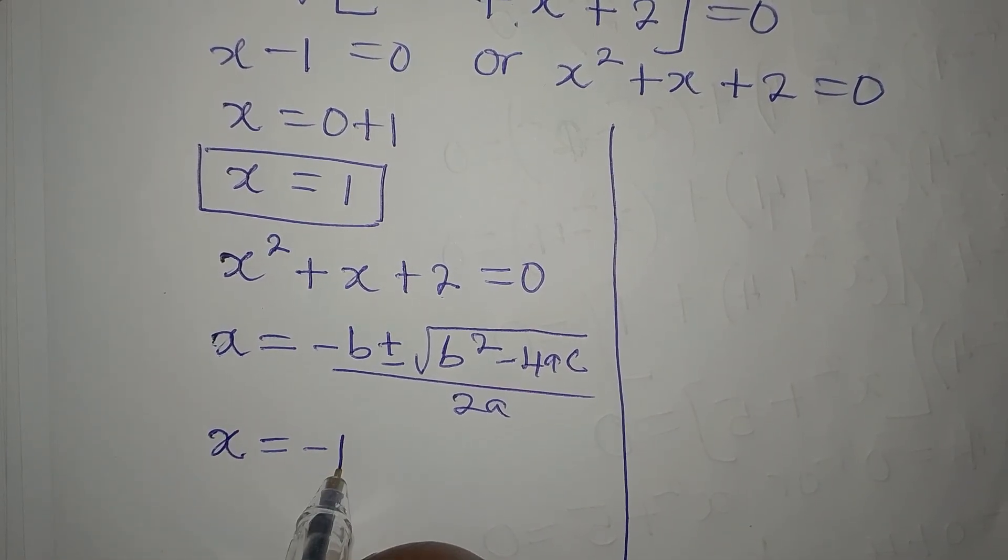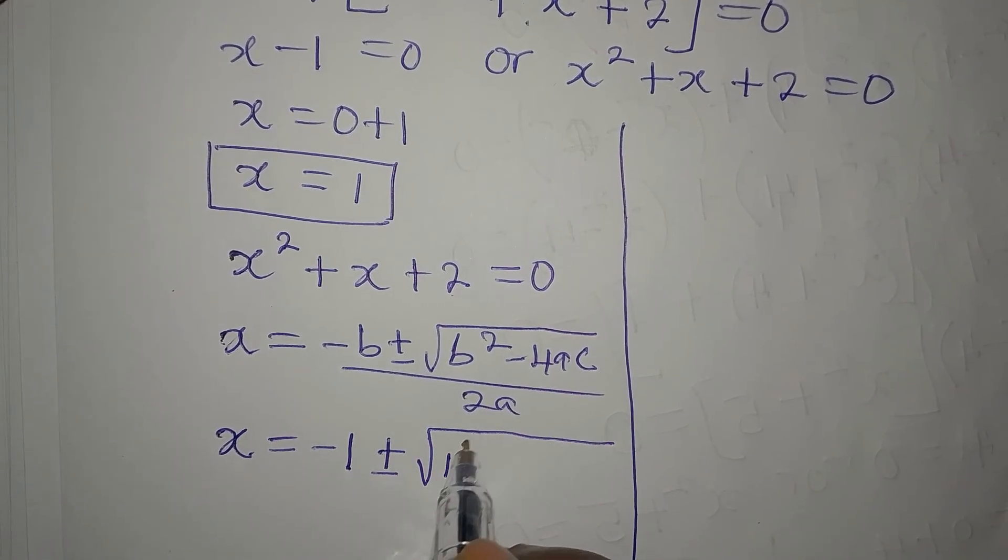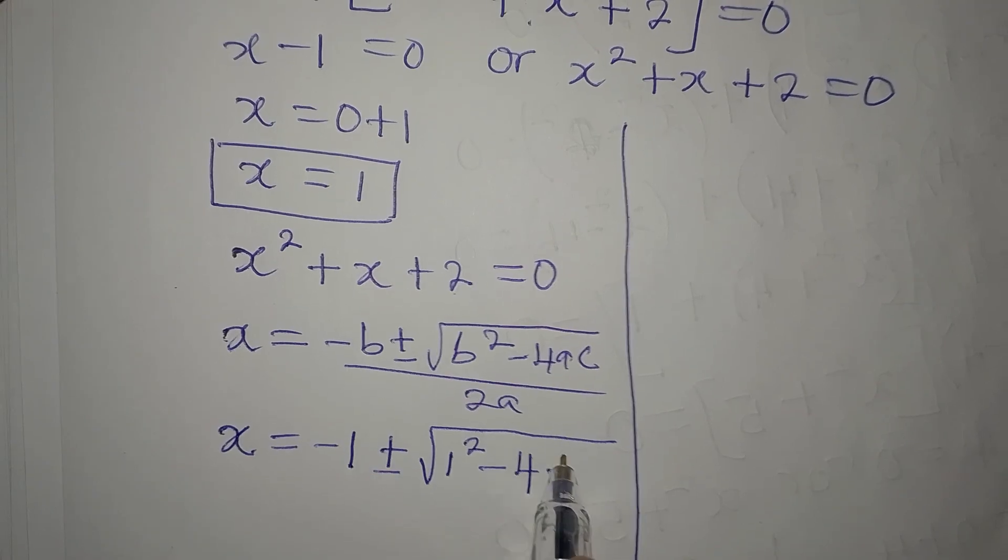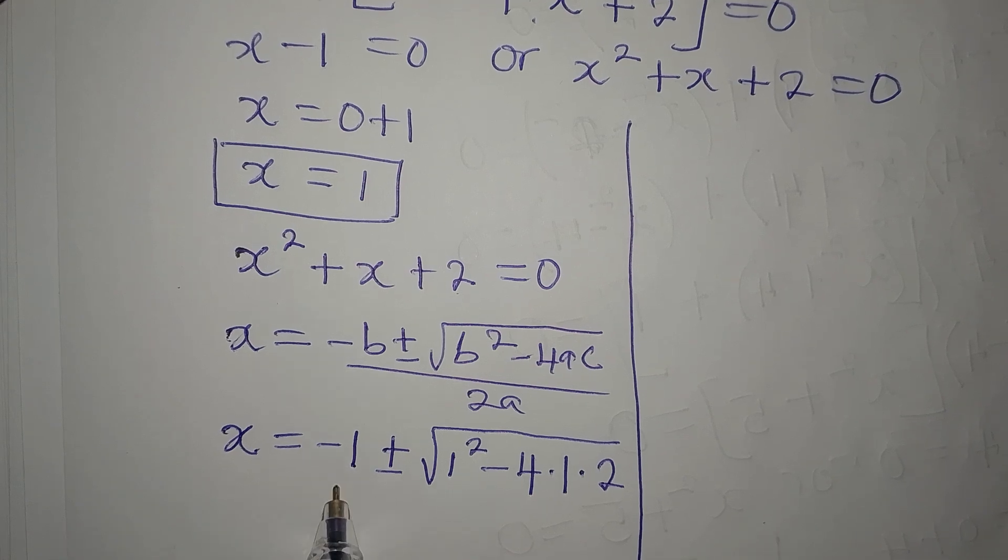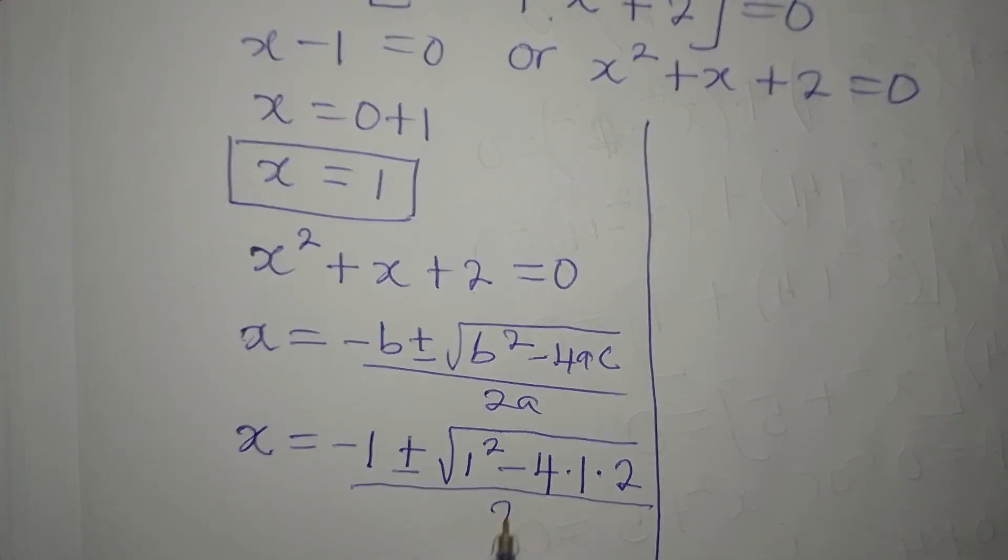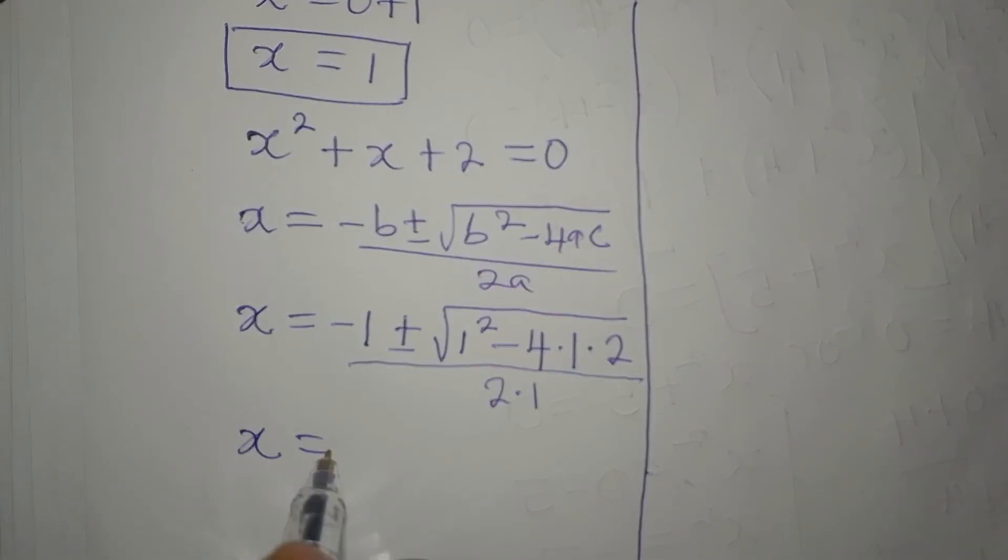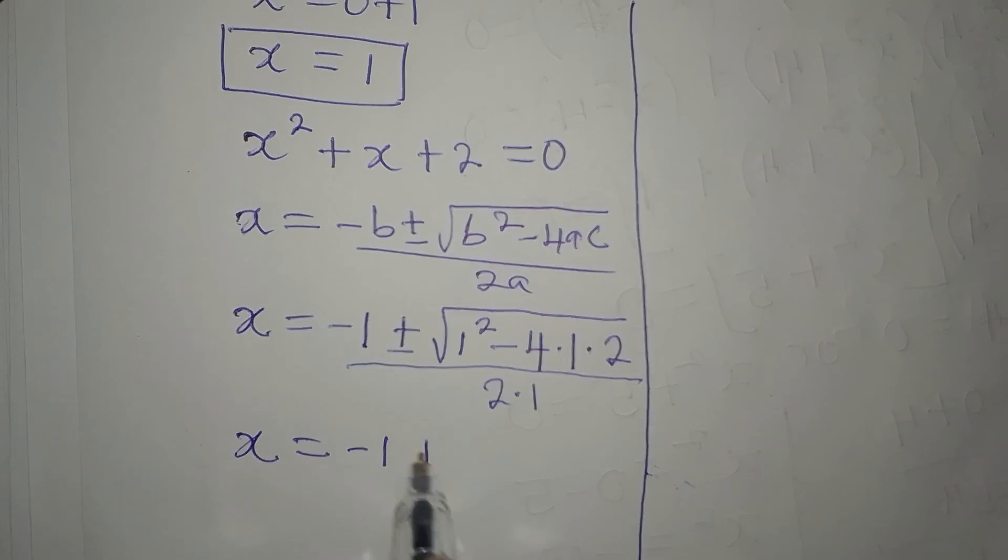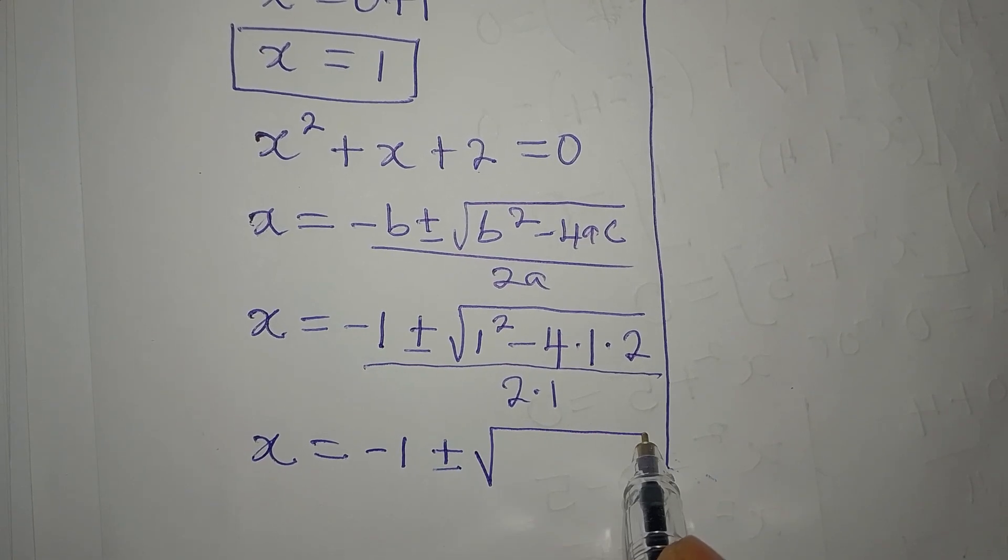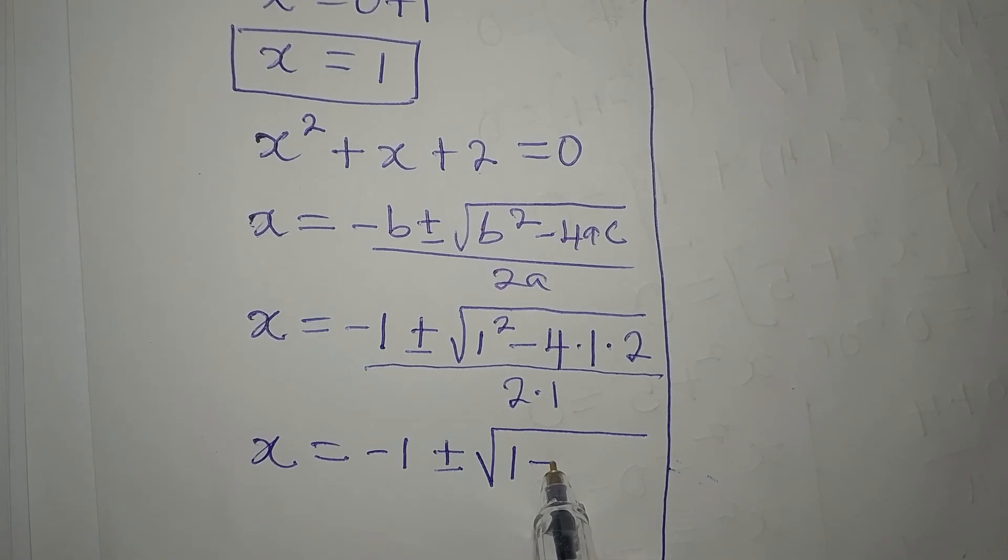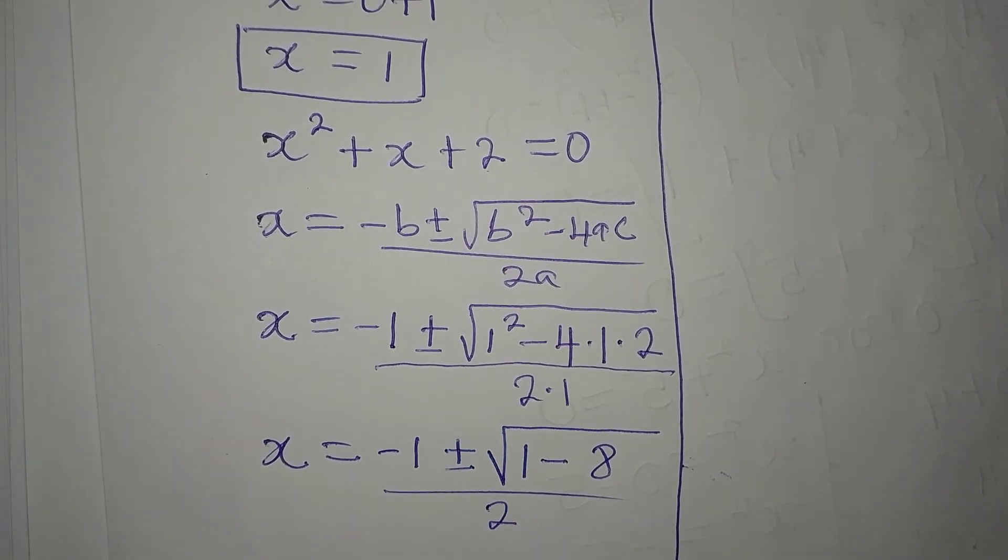x will now be minus 1 (because b is 1), plus or minus the square root of b squared which is 1 squared, minus 4 times a which is 1, times c which is 2, all divided by 2 times a which is 1. So x equals minus 1 plus or minus the square root of 1 minus 8, divided by 2.